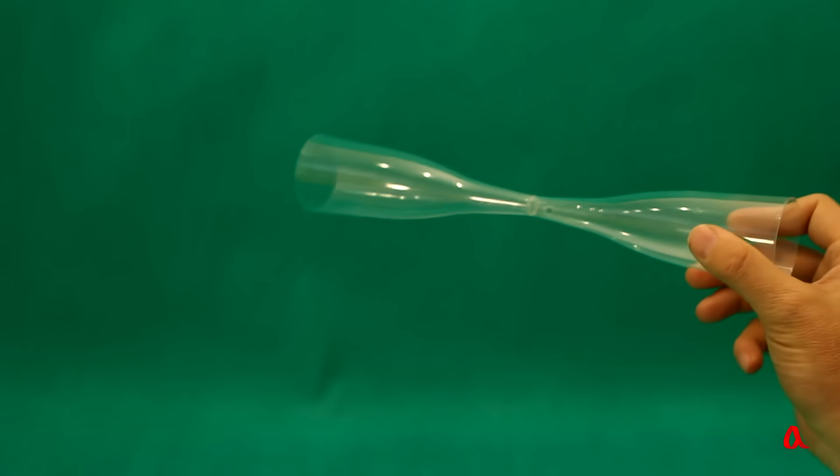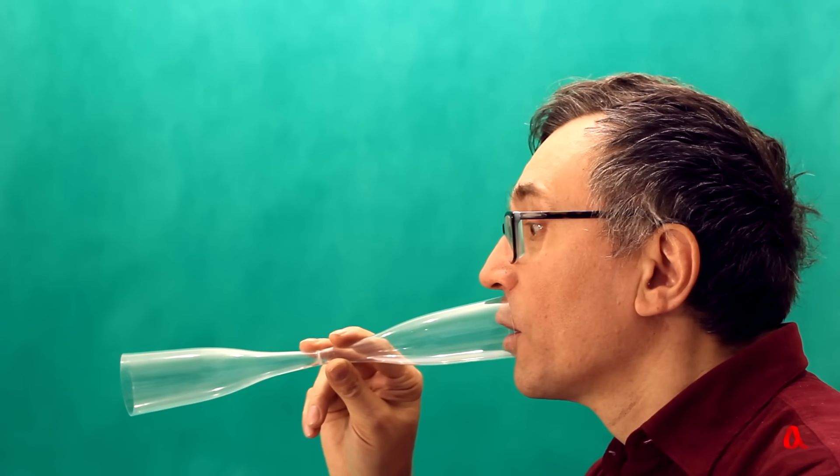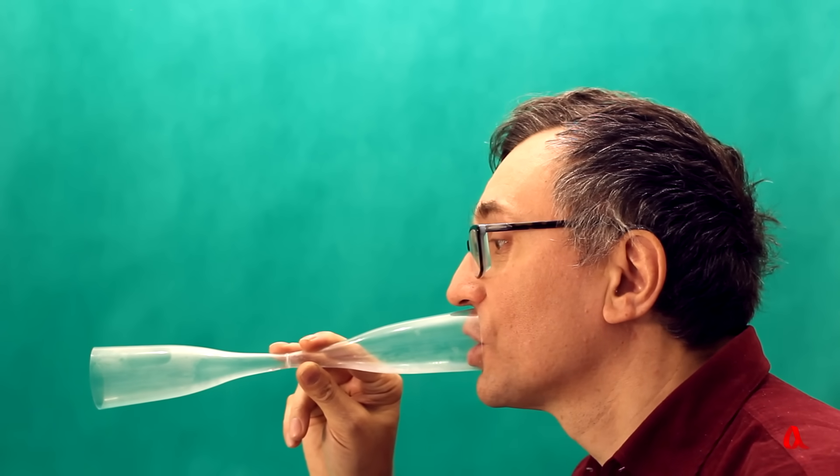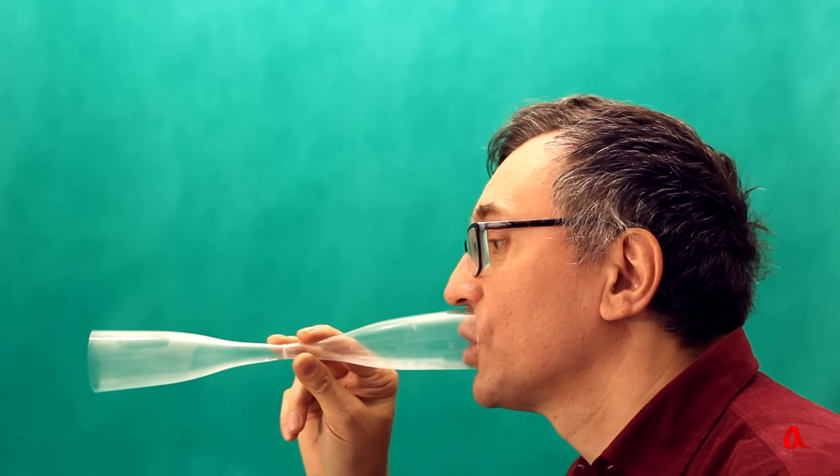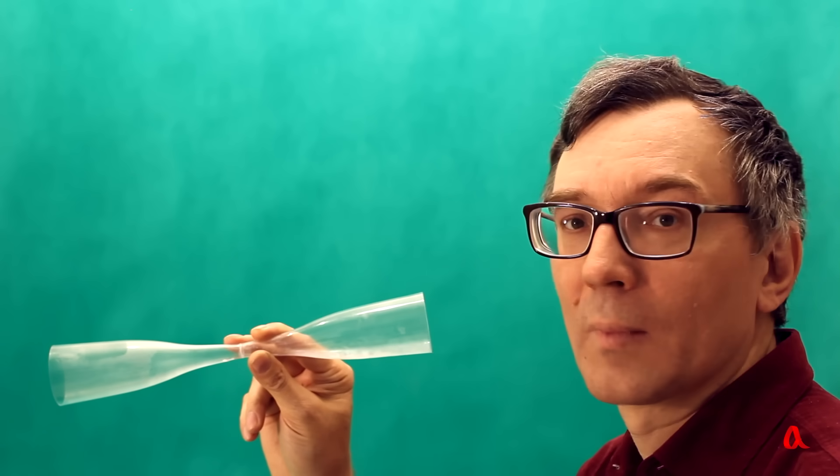We made this narrow neck pipe from two plastic glasses. When we blow it, the air pressure at the exit will be equal to the atmospheric one. This means that inside the narrow neck it will be lower than the atmospheric one.